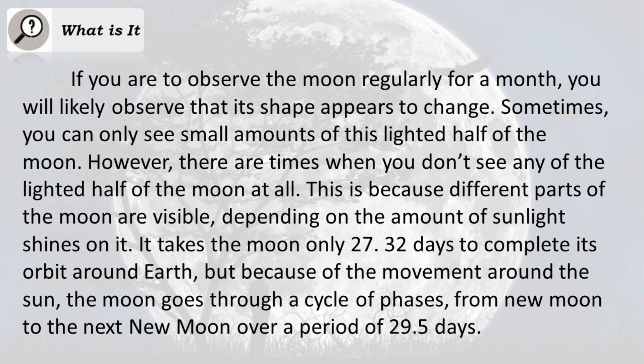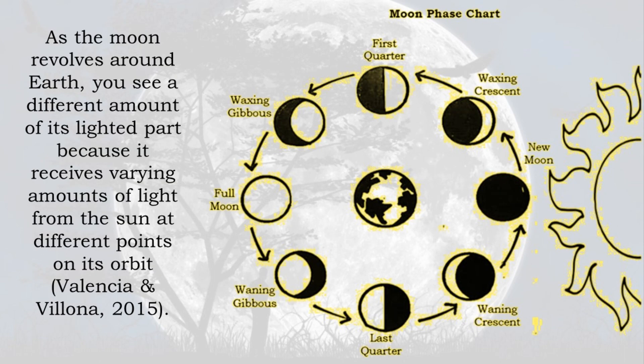If you were to observe the moon regularly for a month, you would likely observe that its shape appears to change. Sometimes you can only see small amounts of the lighted half of the moon; however, there are times when you don't see any of the lighted half at all. This is because different parts of the moon are visible depending on the amount of sunlight that shines on it. It takes the moon only 27.32 days to complete its orbit around Earth, but because of the movement around the Sun, the moon goes through a cycle of phases from new moon to the next new moon over a period of 29.5 days.